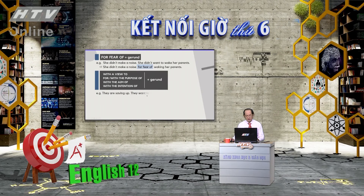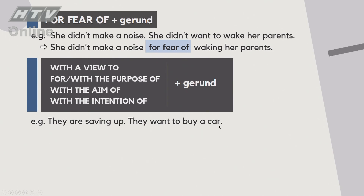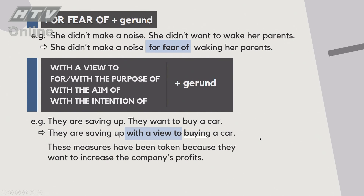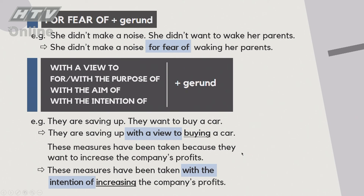Ví dụ: 'They are saving up. They want to buy a car.' Đáp án: 'They are saving up with a view to buying a car.' - chú ý 'with a view to' cộng với verb-ing. Ví dụ thứ hai: 'These measures have been taken because they want to increase the company's profits.' Họ thực hiện những giải pháp này với mục đích tăng lợi nhuận. Đáp án: 'These measures have been taken with the intention of / with the aim of increasing the company's profits.'